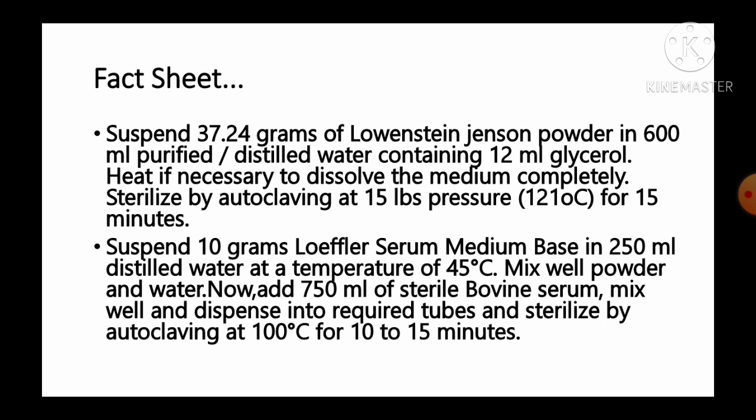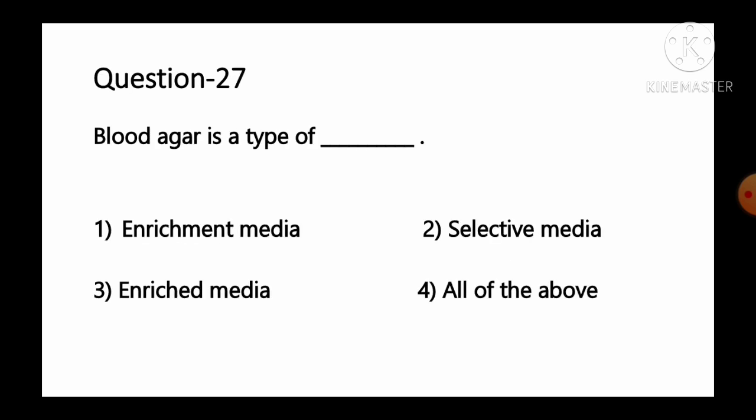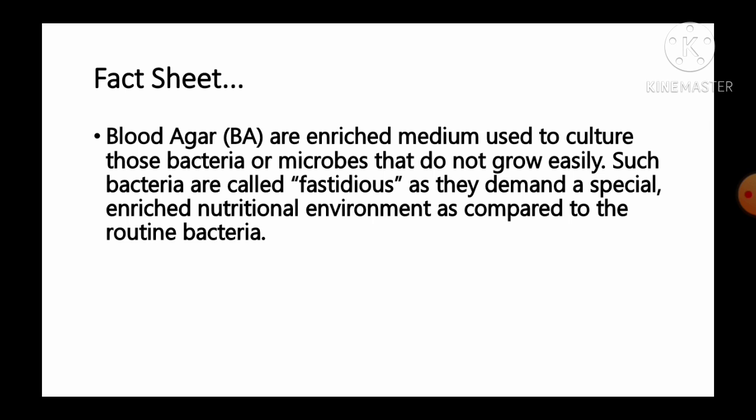Question number 27: Blood agar is a type of — option 1 enrichment media, option 2 selective media, option 3 enriched media, option 4 all of the above. Blood agar is an enriched medium used to culture fastidious bacteria — those that do not grow easily and demand a special, enriched nutritional environment. So option number 3, enriched media, is the correct answer.